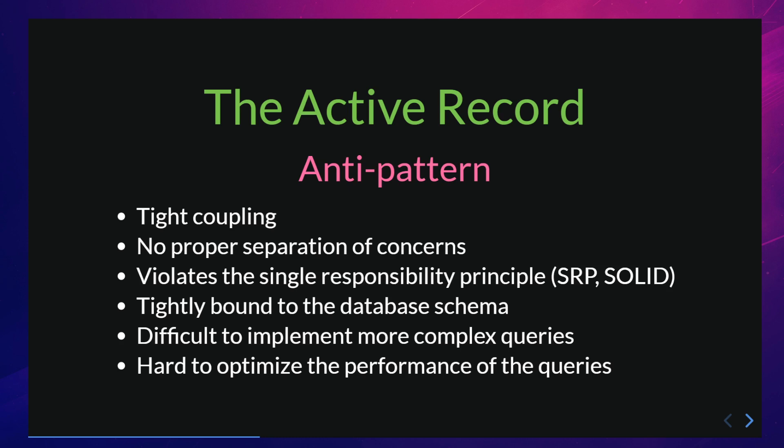While the active record pattern can be a convenient and intuitive way of working with databases, it also has some drawbacks that make it considered as an anti-pattern by some developers. One issue is that it can lead to a tight coupling of the domain objects and the database schema. This means that changes to the database schema can have a ripple effect on the domain object and vice versa, making the codebase harder to maintain and more prone to bugs. Another issue is that it can make it difficult to implement a proper separation of concerns, as it combines the responsibilities of data access and business logic in the same class, which can make it harder to test and maintain.